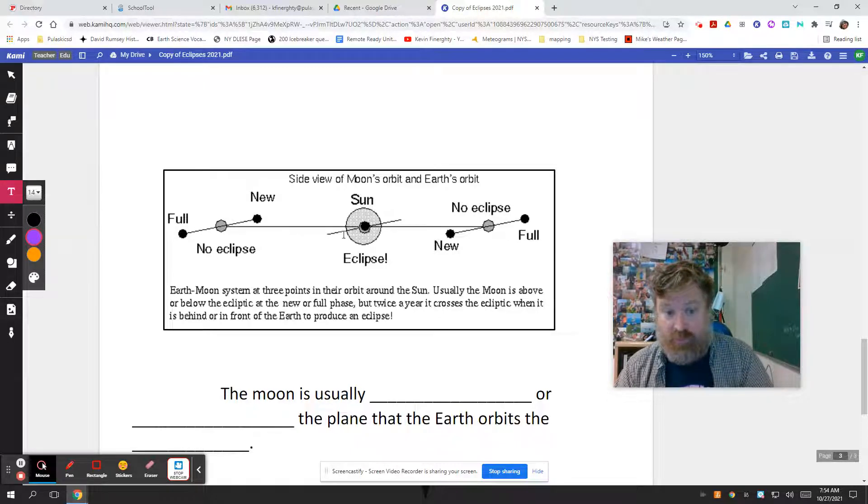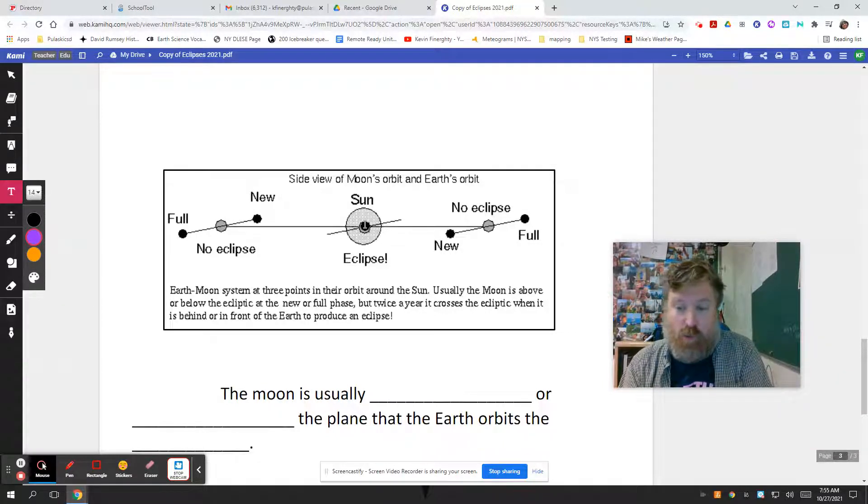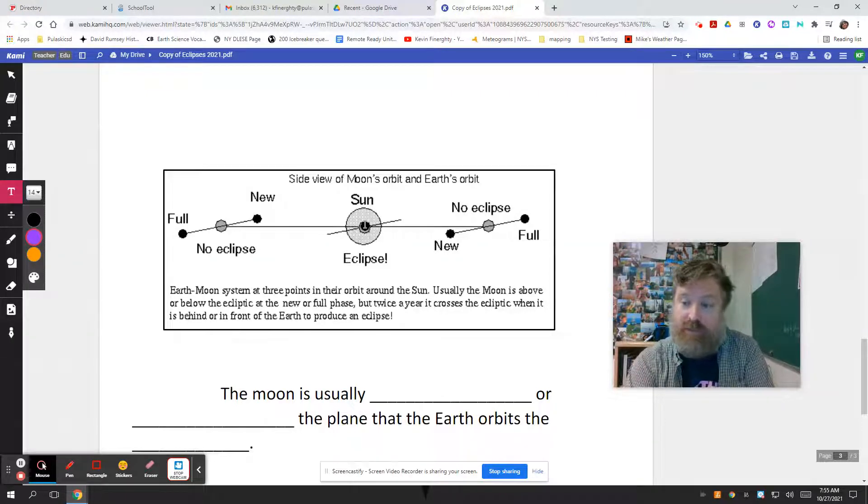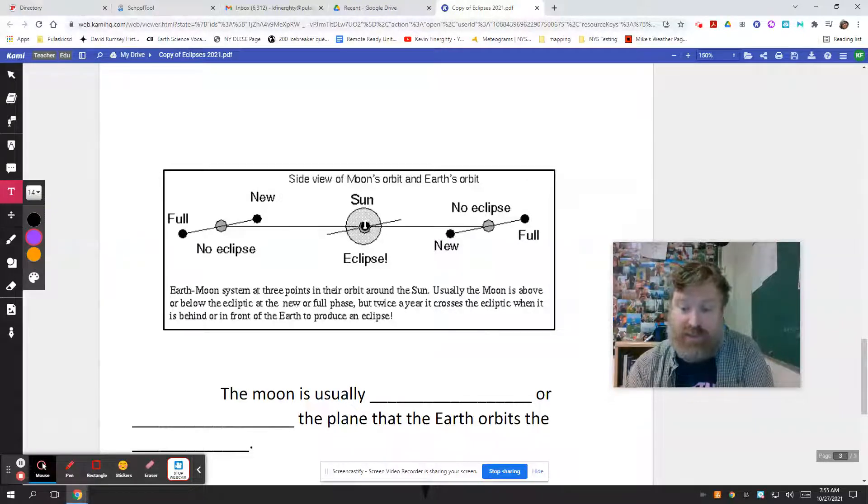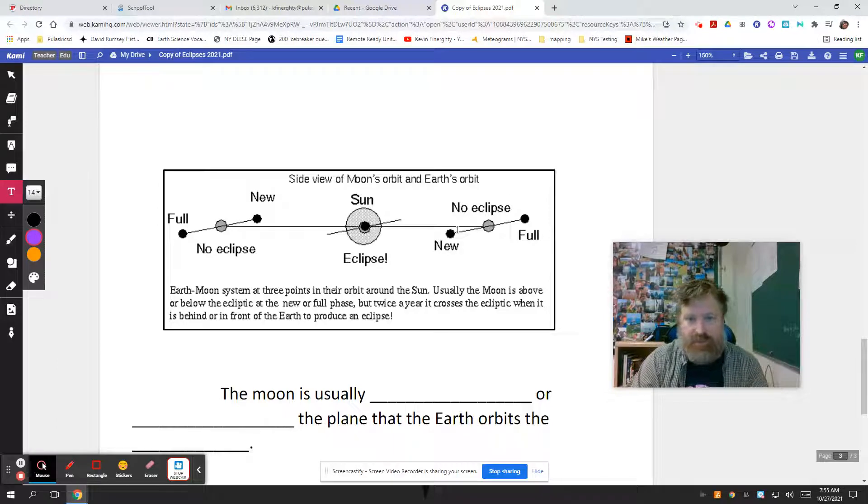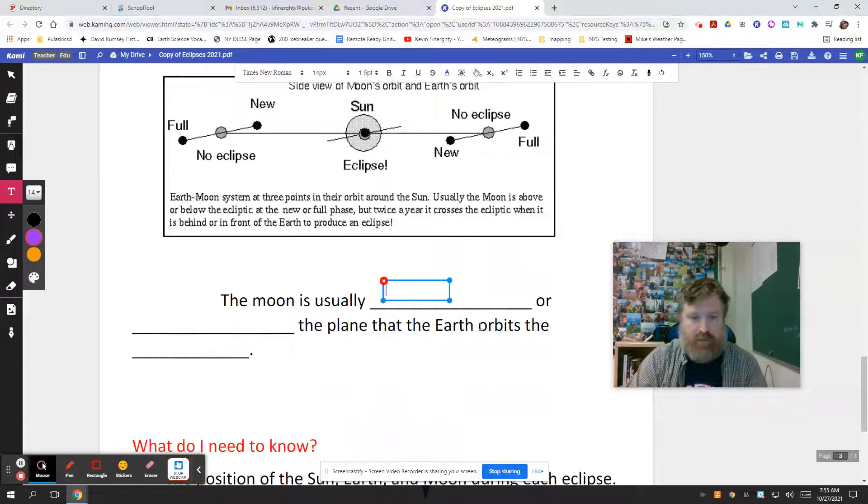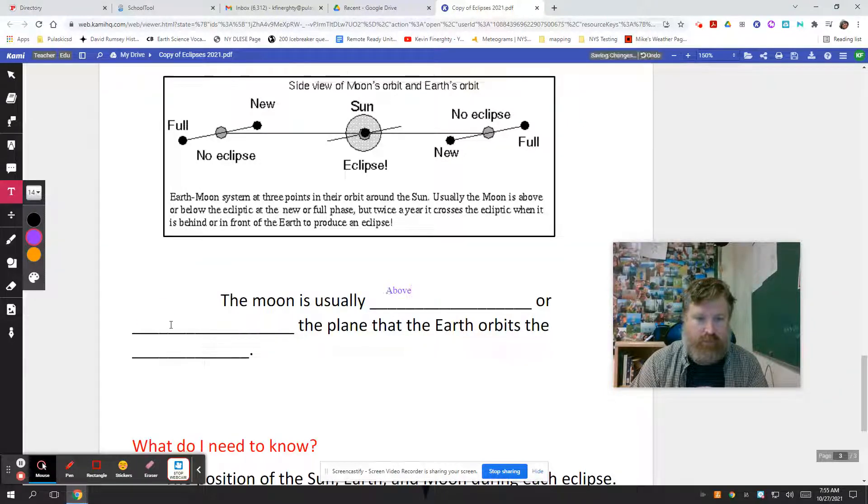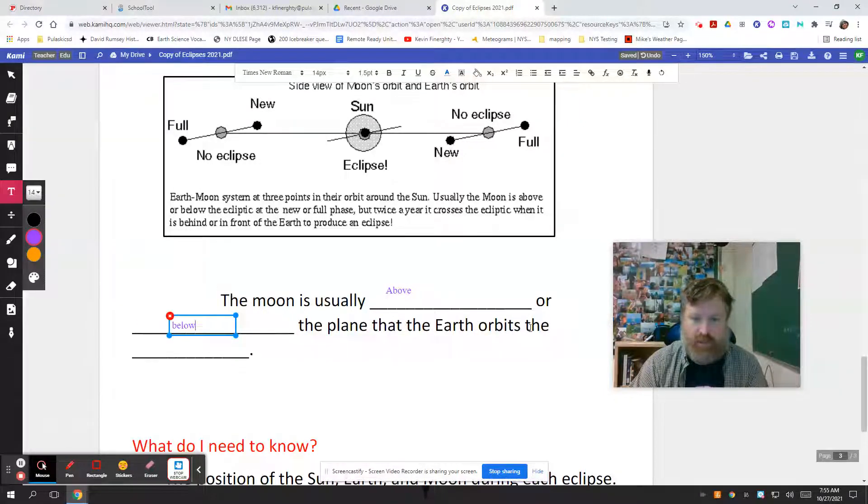So if there's that moment, which should happen twice a year, where it's possibly lined up, it's called the line of nodes, where it would line up, then you need the once out of what? The one position out of the 27.3-day revolution of the moon. It could be either in between on one side or in between on the other. So twice a year, and then on those twice a year, you also need the two days out of the 27.3 for them to line up. So it's rare. Not impossible, not like you'll never have it in a lifetime, but reasonably rare. All the other days, the moon is usually above or below the plane that the Earth orbits.